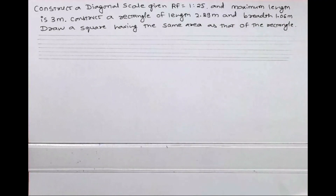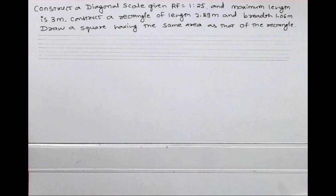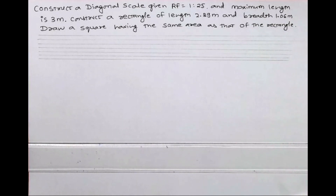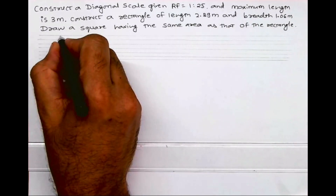Welcome to technical drawing. Today we will see how to draw a diagonal scale when RF is 1 is to 25 and maximum length is 3 meters. Then what we need to do: we need to draw a rectangle of side 2.89 meters and breadth 1.06 meters, and we need to convert this into a square of equal area.